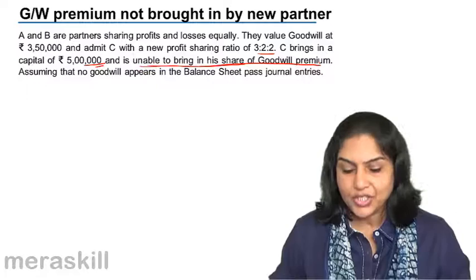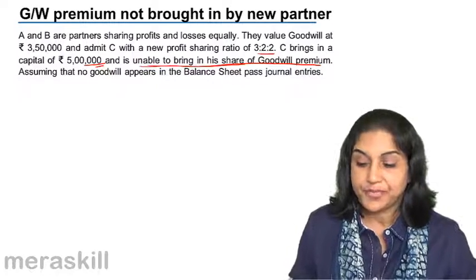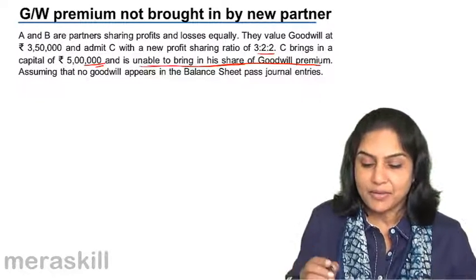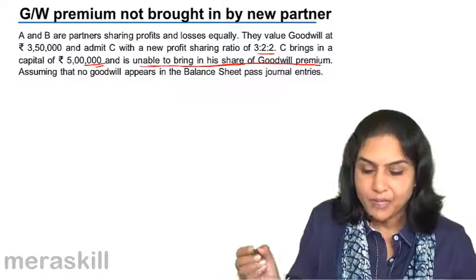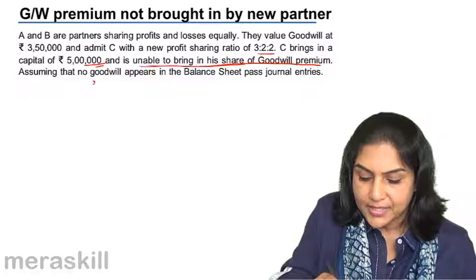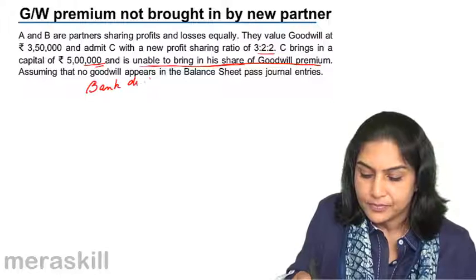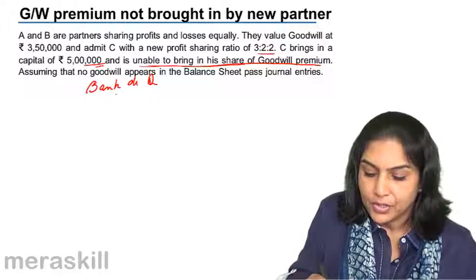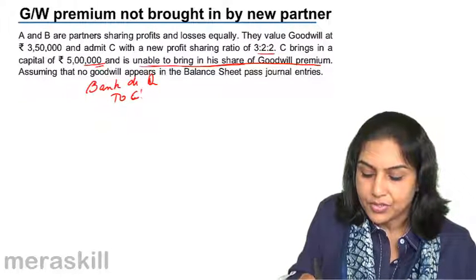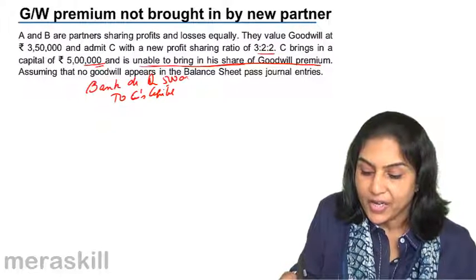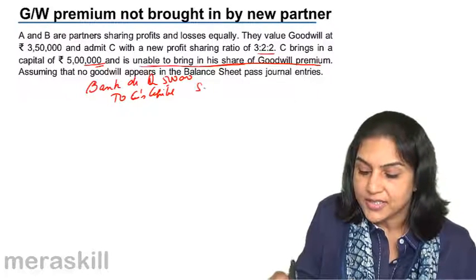What would we do in such a case? We will still reduce C's capital account. First, he brings in money — we will pass an entry for that: Cash or Bank Account debit to C's Capital Account. He brings in only 5,00,000, not 6,00,000.